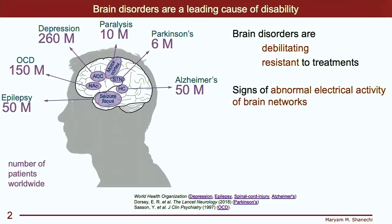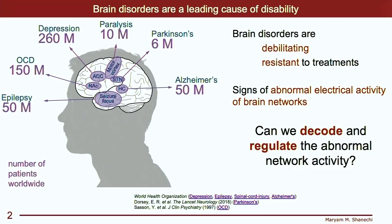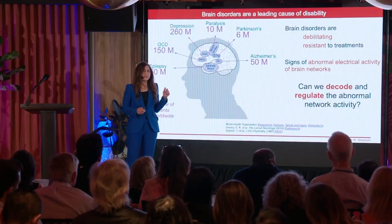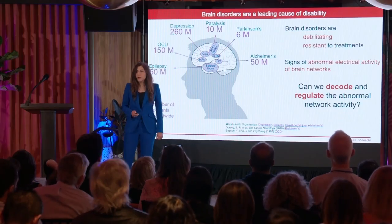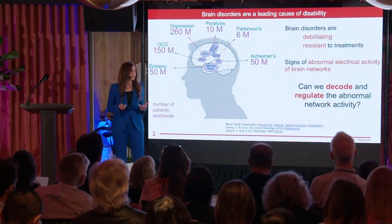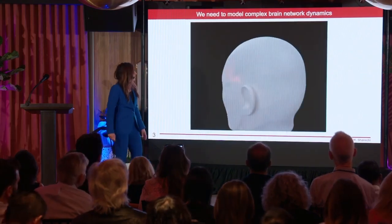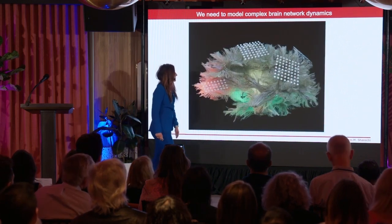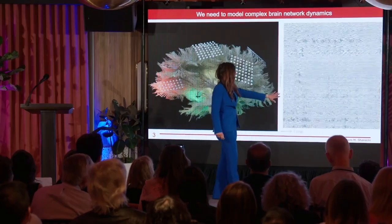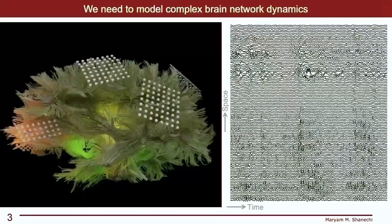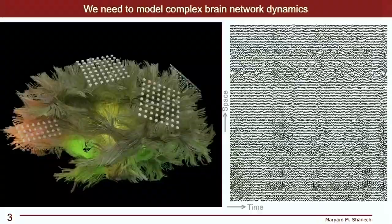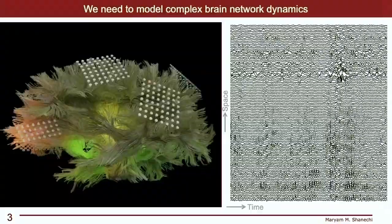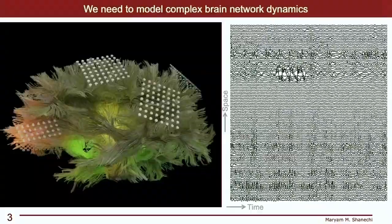Based on the evidence that these disorders are signs of abnormal activity across large-scale brain networks, one idea could be to try to directly decode and regulate these activity patterns. What do these activity patterns look like? I'm showing you electrodes that are implanted in the human brain, and these are signals that we record from them. You can see that these signals are complex, they're noisy, there's no clear pattern that, for example, tells me what somebody's mood is in depression.